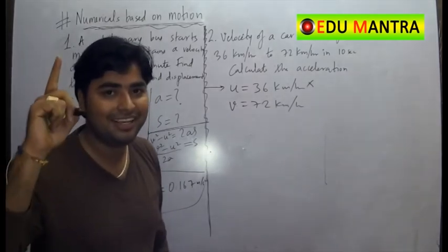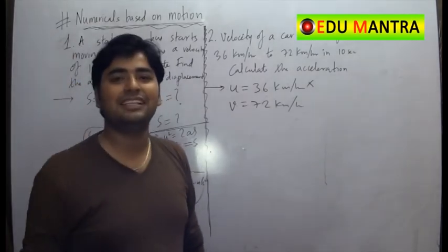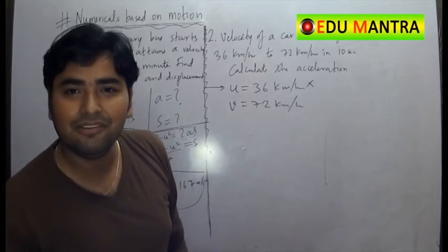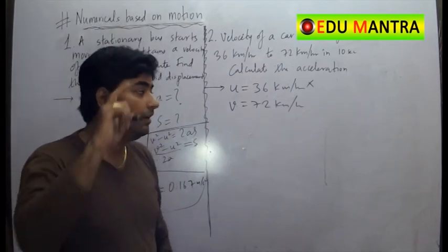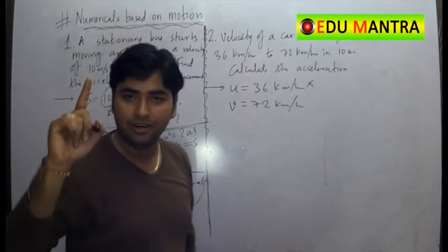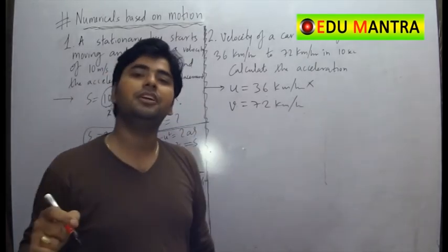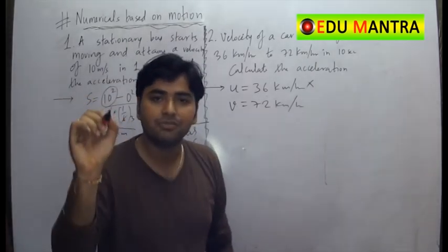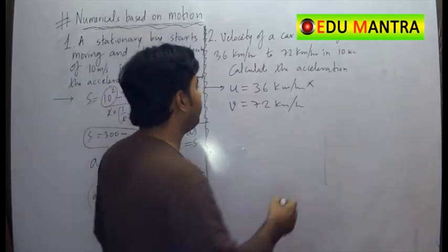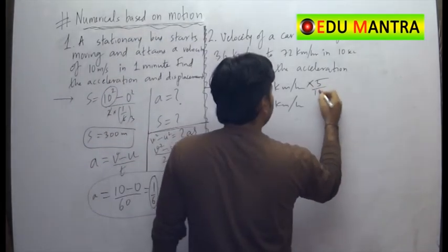So I will have to convert it to meter per second for that. I will have to multiply it by either 1000 by 3600 or simplified form 5 by 18. Always remember, if you convert, if you want to convert velocity from km per hour to meter per second, just multiply it by 5 by 18.